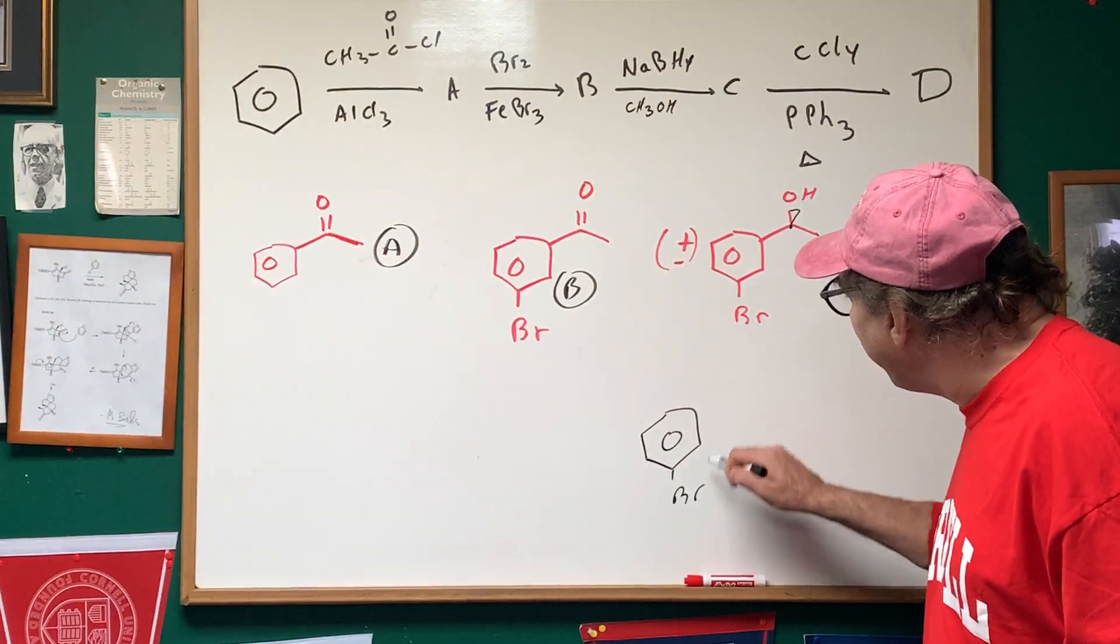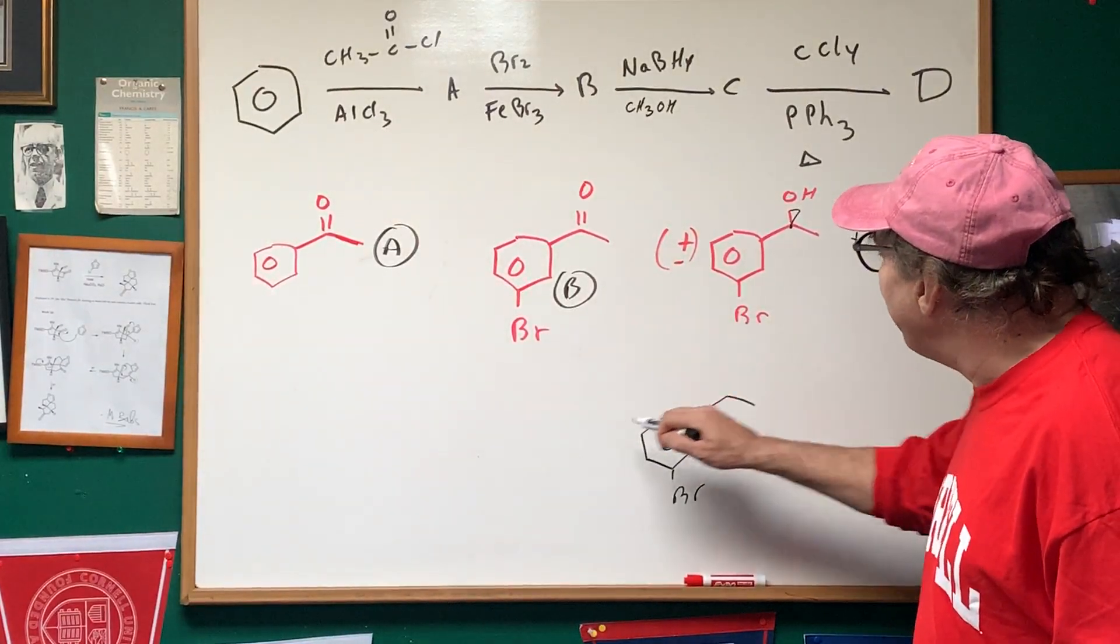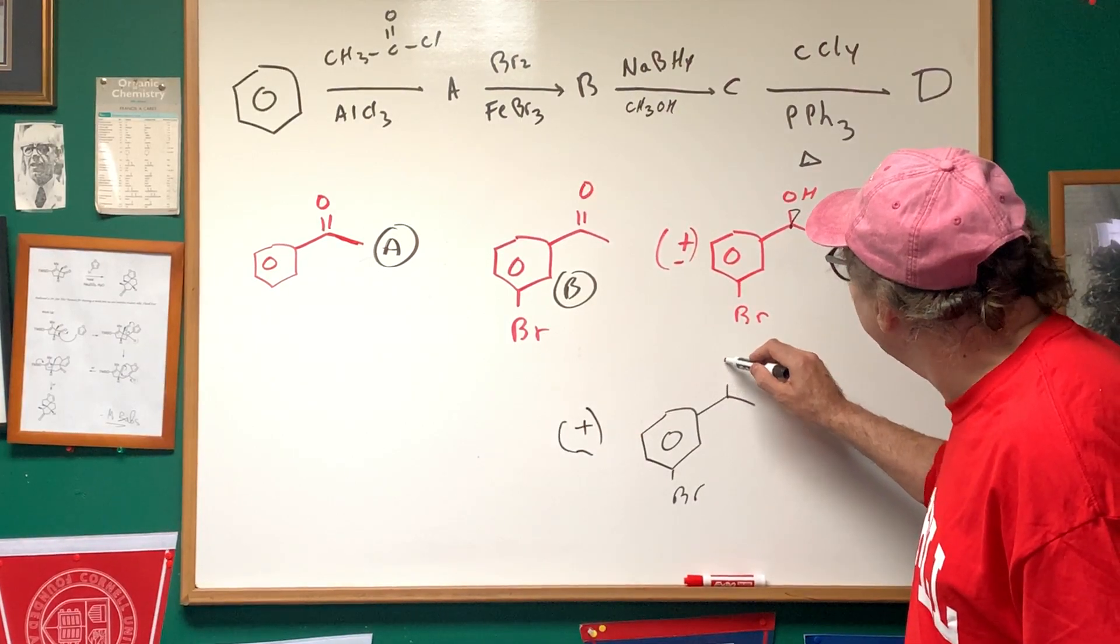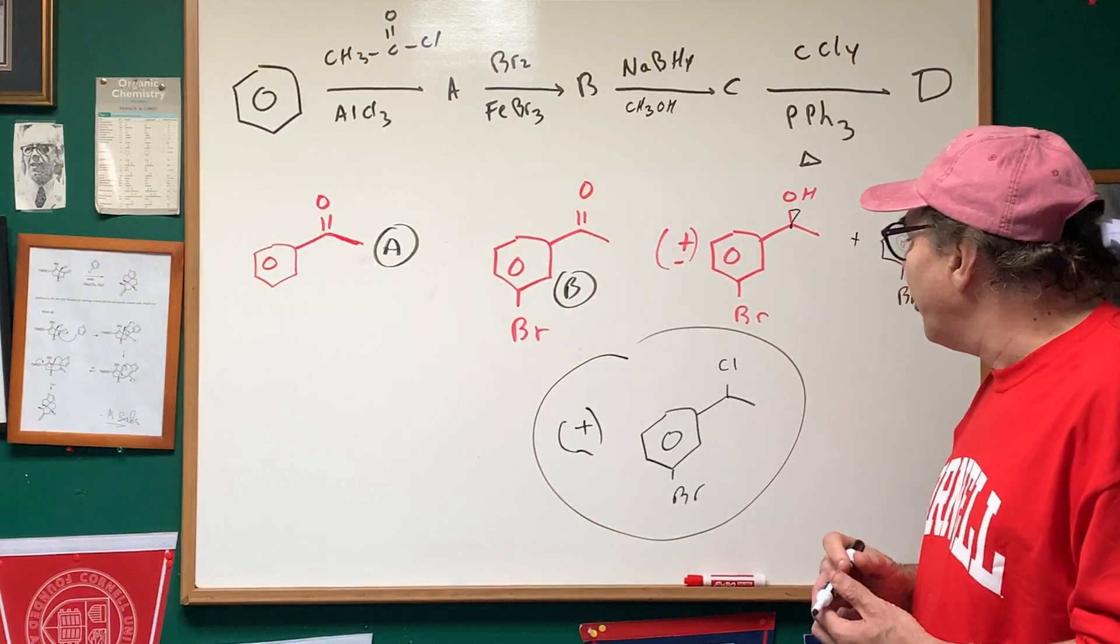what we're going to get is this. We're going to keep the bromine where it is, and we're going to replace—of course, it could be either enantiomer—we replace the OH group with a Cl, and that would be your final product.